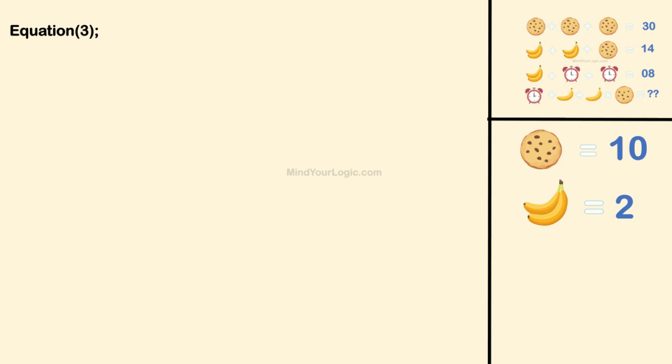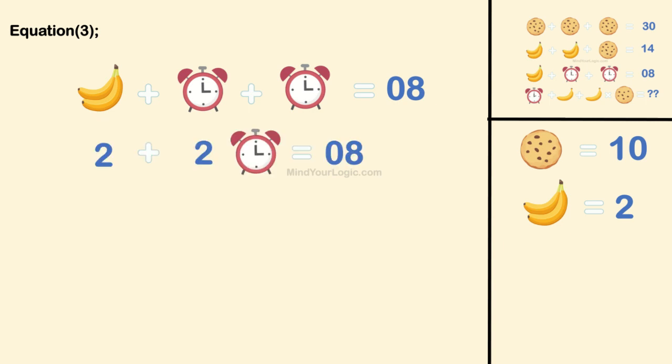Moving forward, for equation 3. 2 bananas plus clock plus clock equals 08. On substituting the values, we get clock equals 3, as it shows 3 o'clock on the clock.